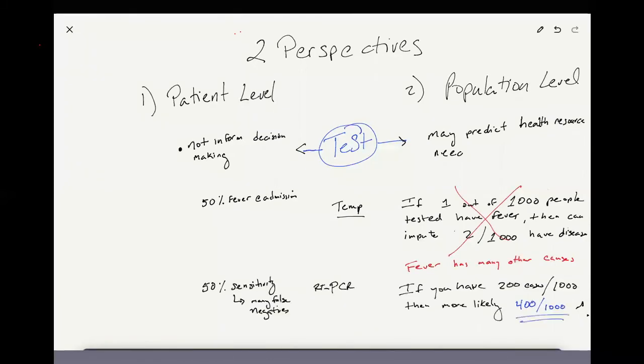But if we looked at the genetic test in this case, with similarly just a 50% sensitivity, there's many false negatives there. But there's a high specificity of this test. So if you have 200 cases out of a thousand, it's more likely that you could double that and that you actually have 400 cases out of a thousand because you know the sensitivity is only 50%.